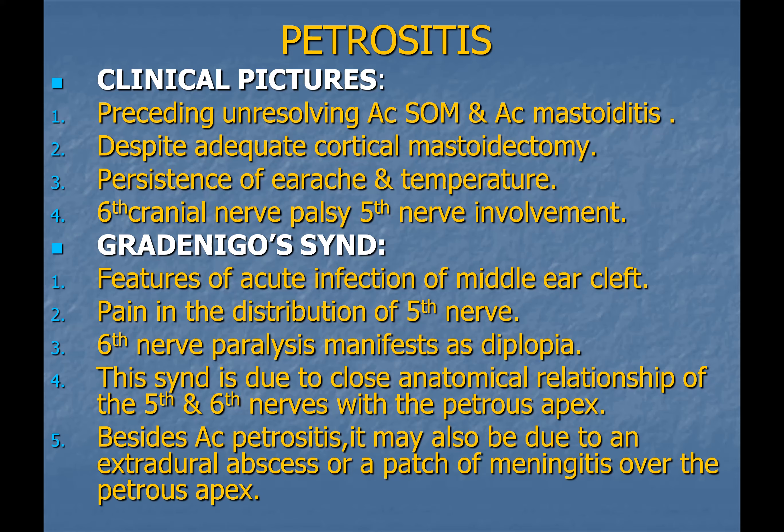For facial nerve paralysis: if the patient has acute otitis media with facial nerve paralysis, IV triple regime plus low-dose steroids are given, and if there is no discharge, myringotomy can be performed. For tubotympanic disease with facial nerve paralysis, no surgical intervention is required — triple regime and low-dose steroids suffice. However, if the patient has atticoantral disease with facial nerve paralysis, urgent mastoid exploration is required.